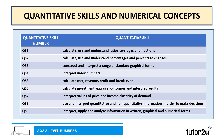Quantitative skill three is construct and interpret a range of standard graphical forms. Quantitative skill four is about interpreting index numbers. Quantitative skill five is the ability to calculate cost, revenue, profit and break-even. Quantitative skill six is about calculating investment appraisal outcomes and interpreting their results.